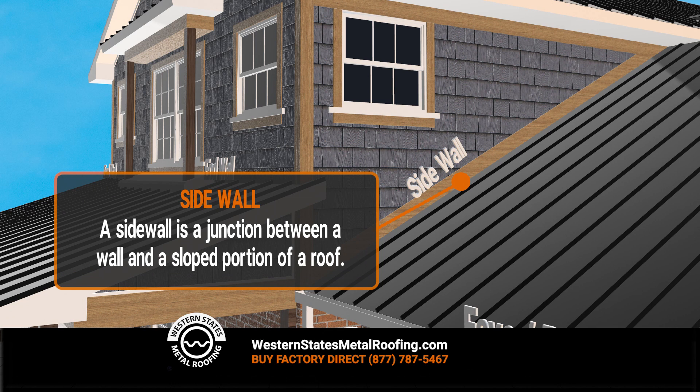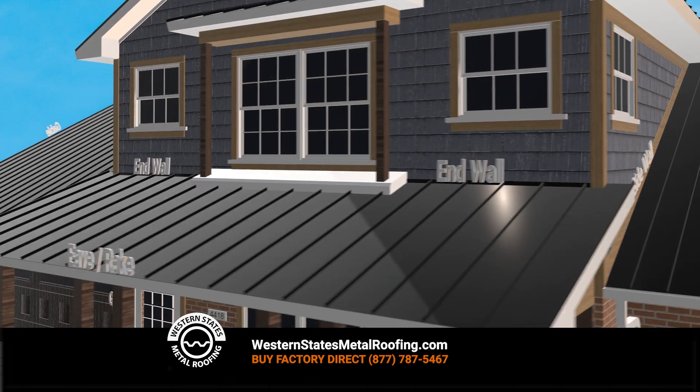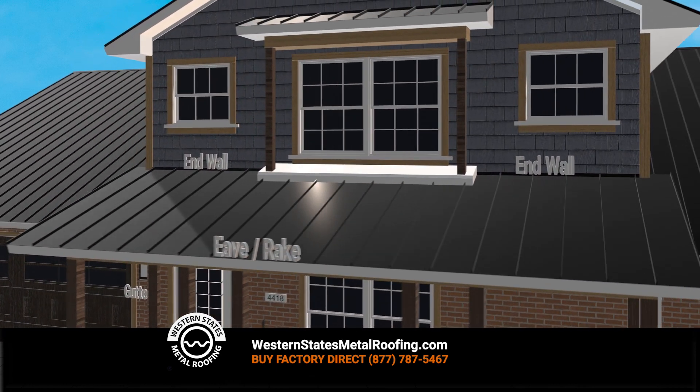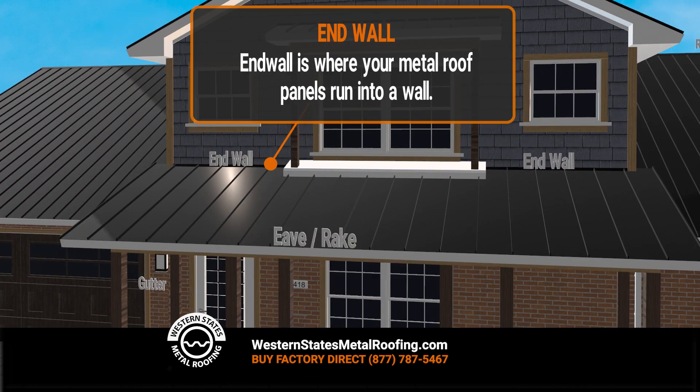A side wall is a junction between a wall and a sloped portion of a roof. An end wall is where your metal roof panels run into a wall.